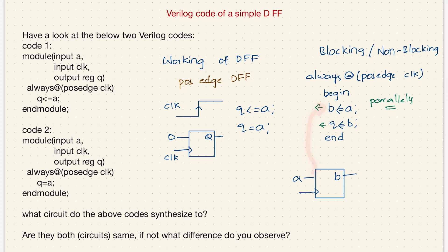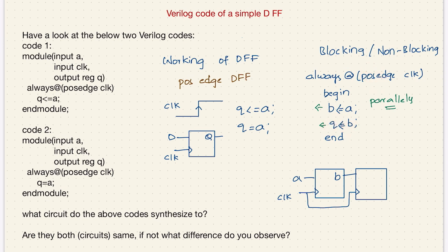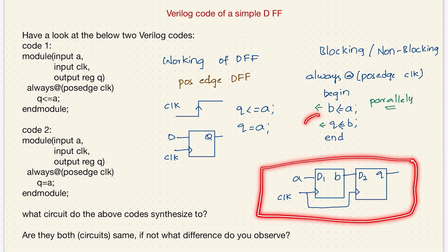Let me draw the circuit now. Whenever there is a positive edge of the clock, input is a and output will be b — this is according to the first statement. Then the same clock goes to the second flip-flop, and whenever there is a positive edge, q gets the value of b. So b is given to q. This is the circuit we get when we synthesize this code.